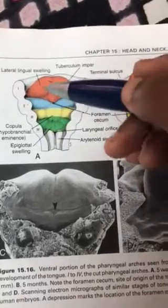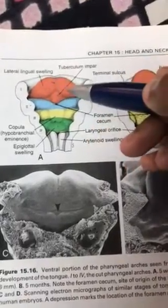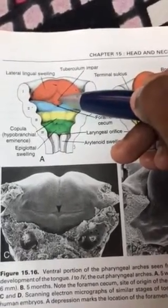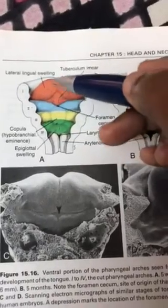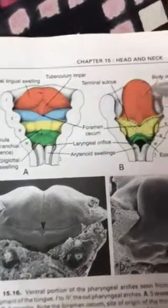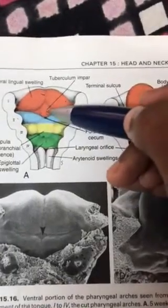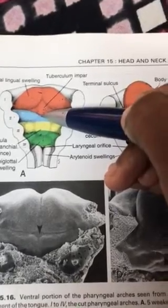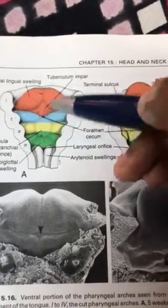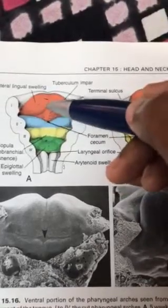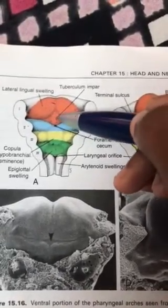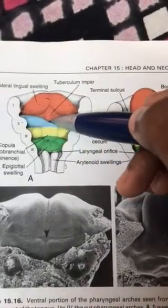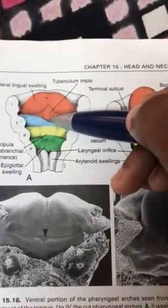The two lateral lingual swellings enlarge and fuse with the median lingual swelling (tuberculum impar), and together they form the anterior two-thirds of the tongue. In between the tuberculum impar and the cupula there is a foramen called the foramen cecum, and from here the thyroglossal duct starts — that will be covered in the next video. So: two lateral lingual swellings plus tuberculum impar join to form the anterior two-thirds.